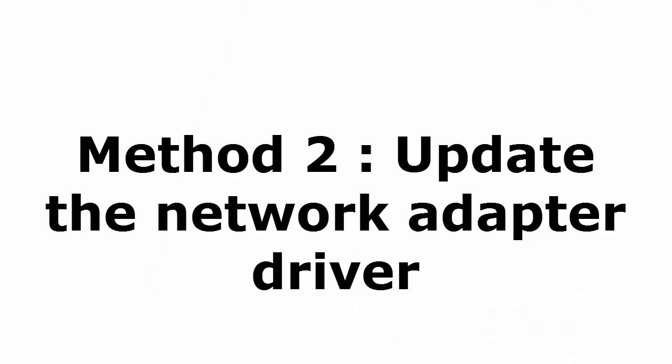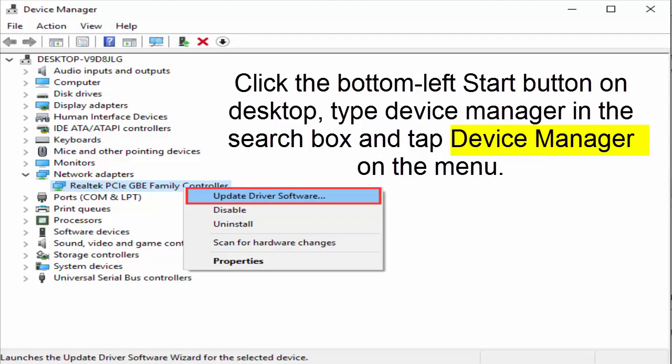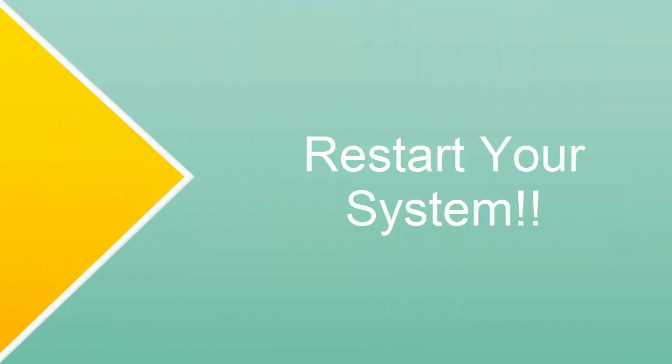If not, let's move to Method 2: Update the network adapter driver. Go to the Device Manager by clicking the Start button on the desktop and typing 'device manager' in the search box, then select Device Manager from the menu. In Device Manager you can see all drivers listed. Go to Network Adapters, right-click on your adapter, and click 'Update driver software.' You can update either manually or automatically — I suggest going online to update the driver software. If there are any updates, install them, then restart your system and see if that works.